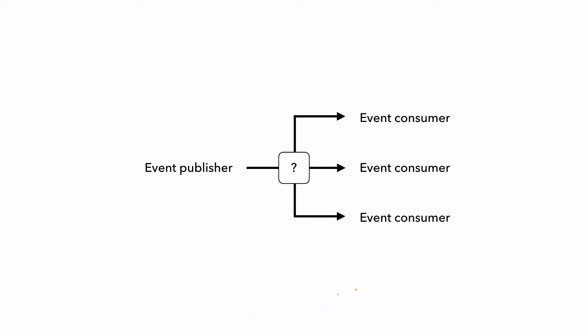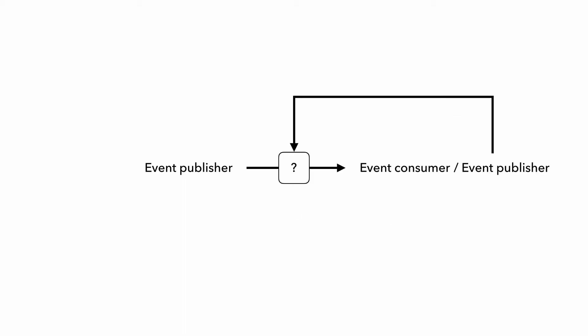You can have multiple consumers for the same event. Each will do a different thing, and they're decoupled from each other and can scale and fail independently. The event publisher doesn't need to know who these consumers are either — its job is to let the world know that something happened. And event consumers can also act as event publishers, making state changes that others might be interested in, and publishing their own events which other consumers can subscribe to.